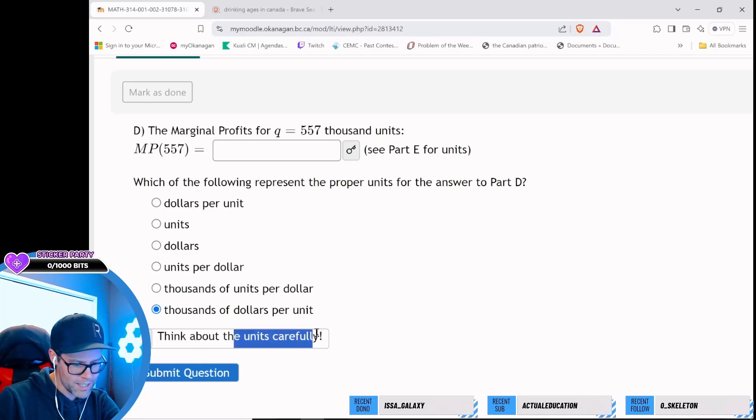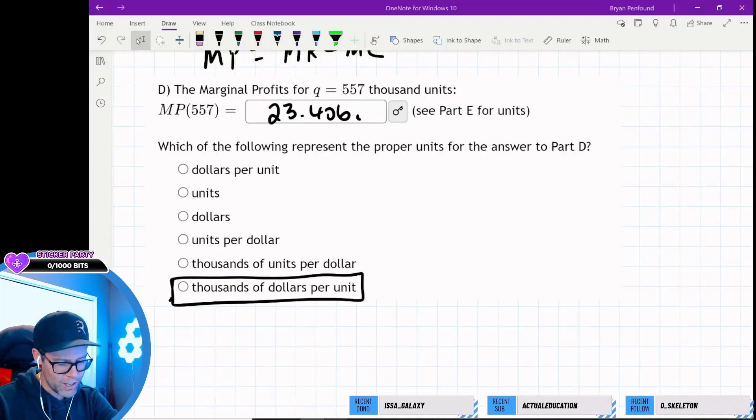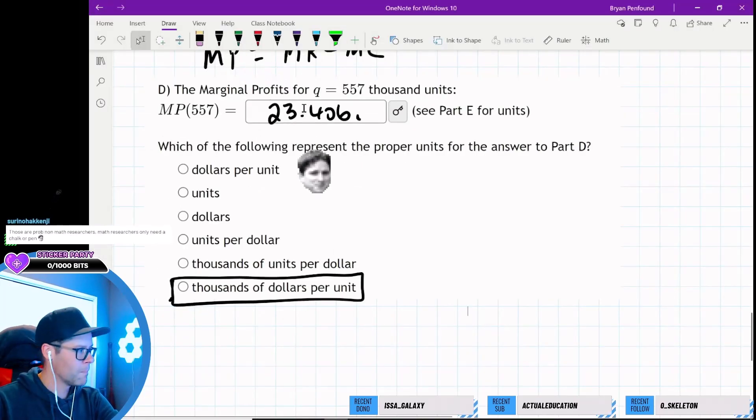We can double check. It just says think about the units carefully. It doesn't give us the answer. Okay, but 23.406, I'm pretty sure it's thousands of dollars per unit.